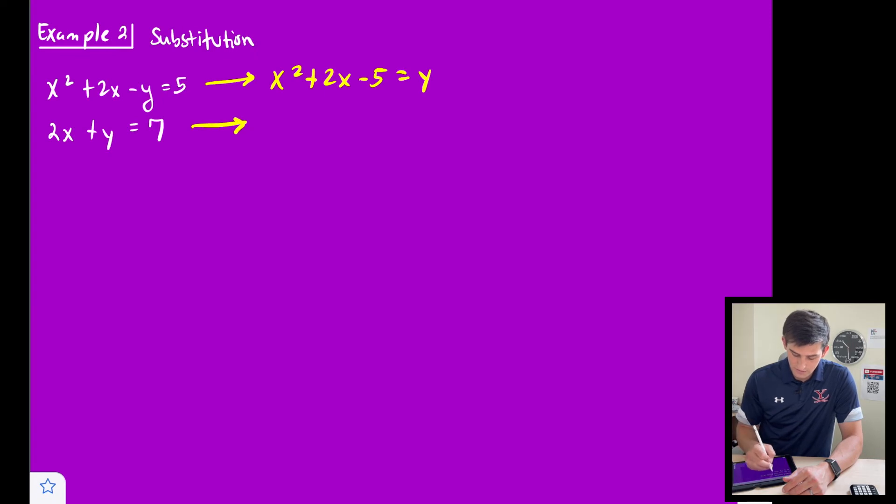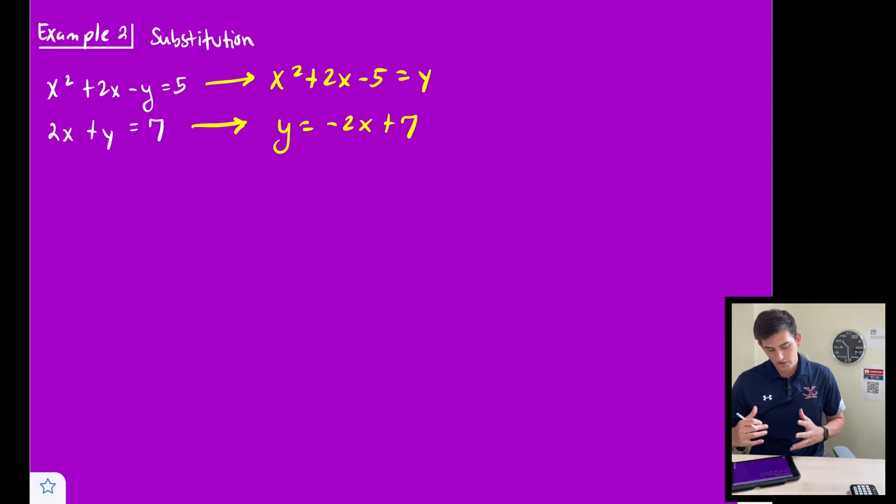And then for this equation, let's write it as 2x - 7. Actually, you know what? Let's write it as y = -2x + 7. All right. So all we did there for that second one is just subtract 2x to the other side.